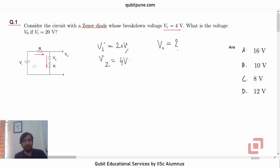So we can now apply the loop rule here. So let us say I is the current flowing through the loop. So we can say by loop rule,